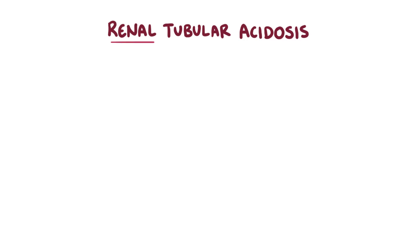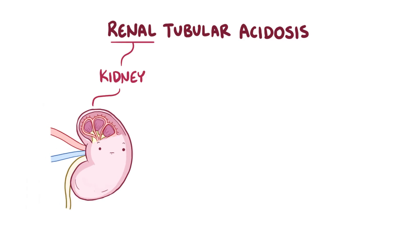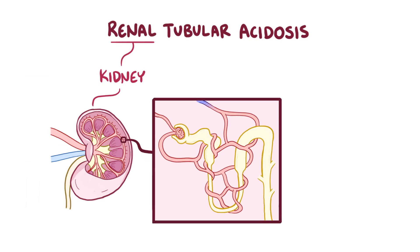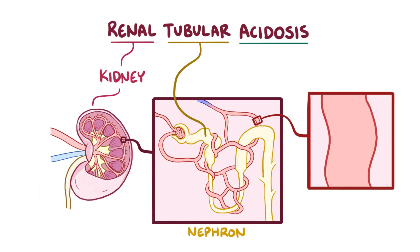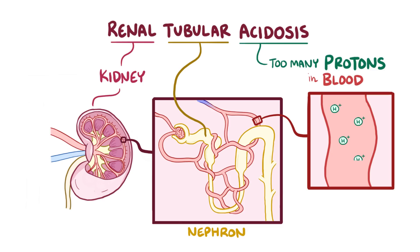With renal tubular acidosis, renal refers to the kidney, tubular refers to the main tube portion of the nephron, and acidosis refers to having too many protons or increased acidity in the blood. So renal tubular acidosis, or RTA for short, describes increased acidity in the blood because the renal tubules can't get rid of protons.